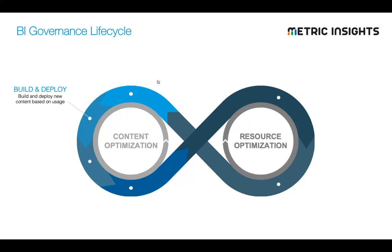The next step after content is out there is to make sure you're measuring engagement — to understand the usage patterns for this content over time. Does it have a flurry of activity initially and then die off? Or is there sustained usage? Who's using it? All those things really inform a deeper understanding of how effective the launch of that content is and how that effectiveness is sustained over time.